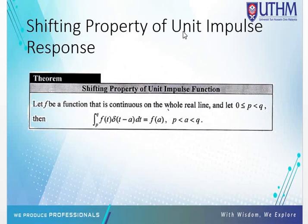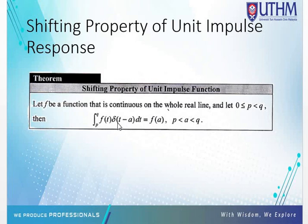This is the shifting property of the unit impulse function. Let f be a function that is continuous on the whole real line. The function f(t) multiplied by delta(t minus a) — where delta(t minus a) is a single signal at t equal to a — means the product f(t) times delta(t minus a) evaluates only at the location a. The value a must be between the integration limits p and q.